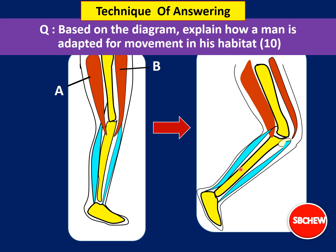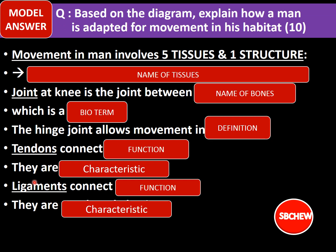Movement in man involves five tissues and one structure. Movement is not caused only by bones or muscles — many tissues are involved. Try to recall all the tissues studied in this topic. To obtain the full 10 marks, you must cover all of them: joints (the structure), plus the five tissues — bones, tendons, ligaments, cartilage, and muscles. Explain the characteristics and adaptations of each.